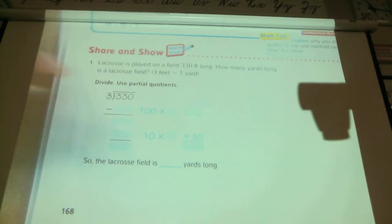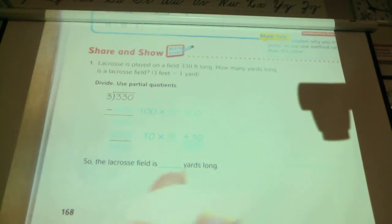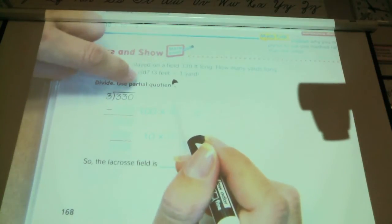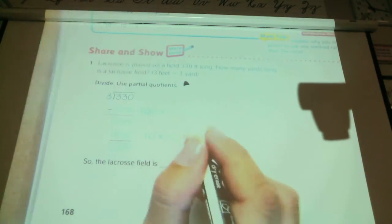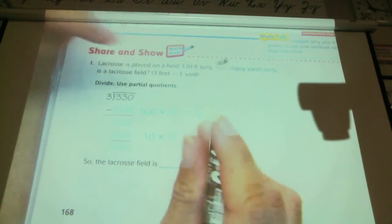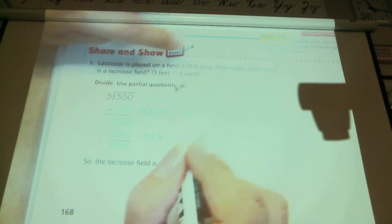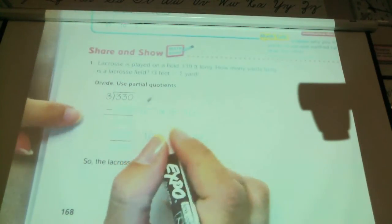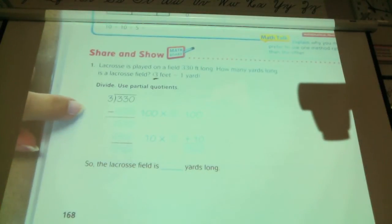So lacrosse, we're still talking about lacrosse. Lacrosse is played on a field 330 feet long. How many yards is a lacrosse field? Now this is a two-part problem because a foot and yard are not the same thing. It tells you that 3 feet equals 1 yard. So it wants us to convert this 330 feet to yards. So I have to divide 330 by 3.